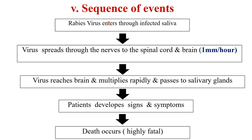Sequence of events: the rabies virus enters through infected saliva. The virus spreads through the nerves to the spinal cord and brain at 1 mm per hour. The virus reaches the brain, multiplies rapidly, and passes to the salivary glands. The patient then develops signs and symptoms, and death occurs. It is highly fatal.